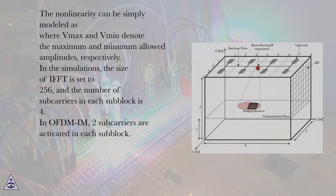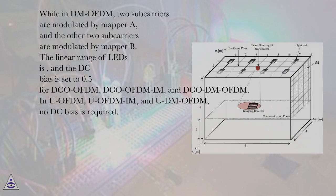In the simulations, the size of IFFT is set to 256, and the number of subcarriers in each subblock is 4. In OFDM-IM, two subcarriers are activated in each subblock.